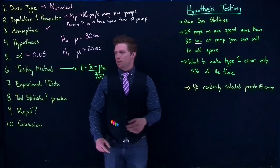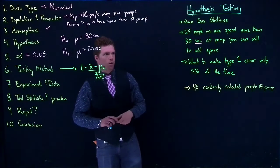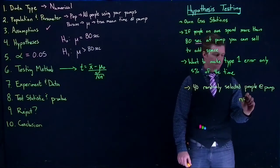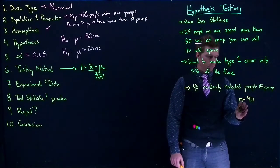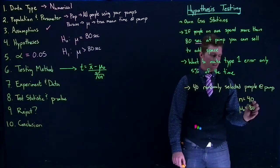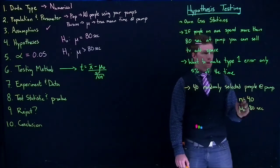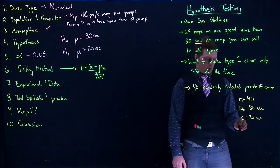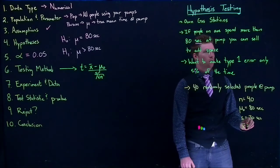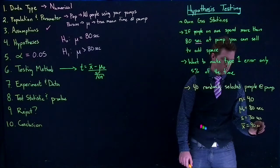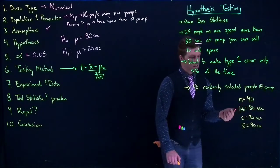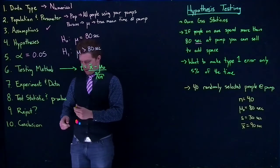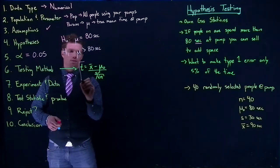Now we conduct our experiment and collect data. We have n equals 40, mu-naught equals 80 seconds (the hypothesized mean), sample standard deviation s equals 30 seconds, and x-bar — what we got from our sample — equals 90 seconds. Now we need to calculate our test statistic.